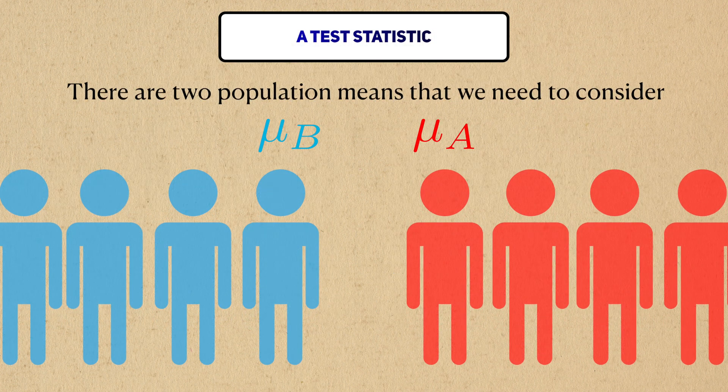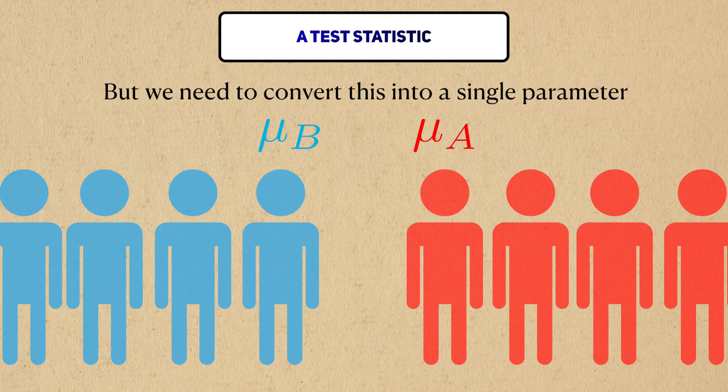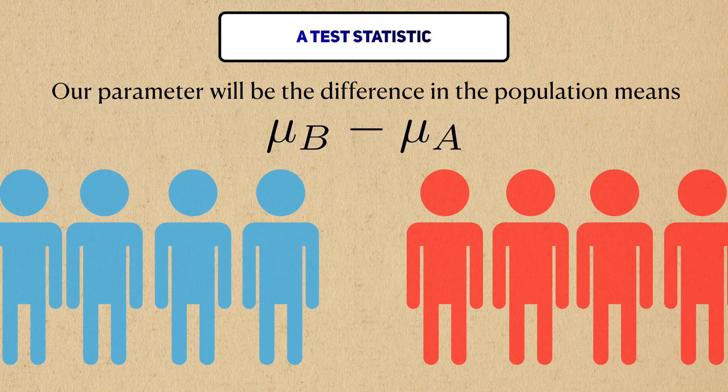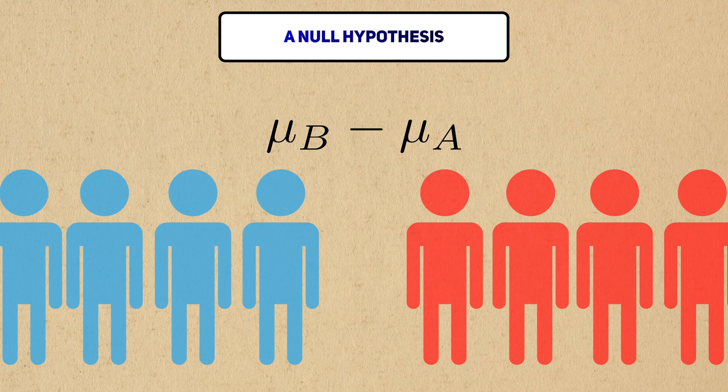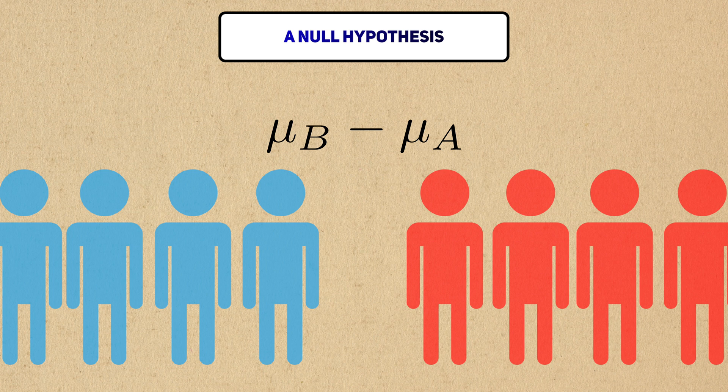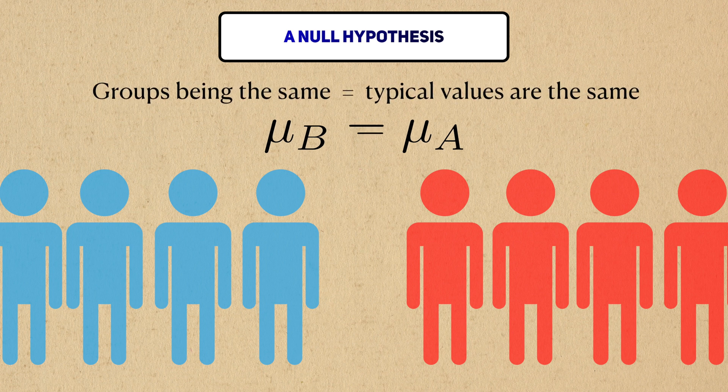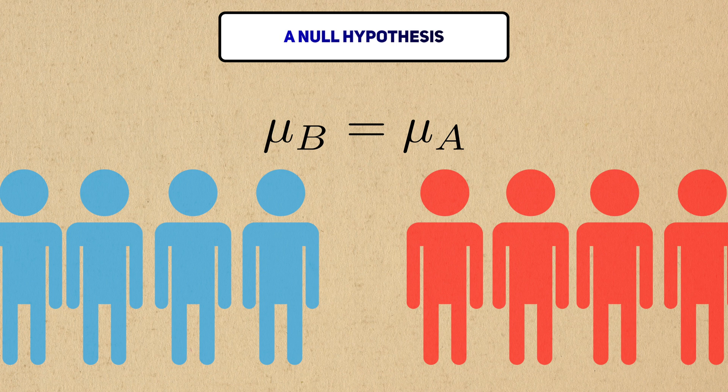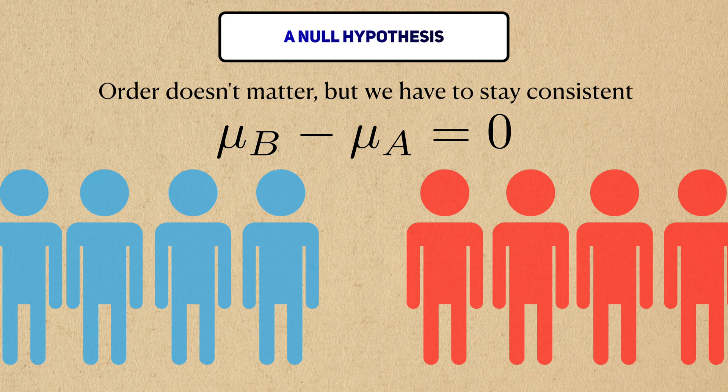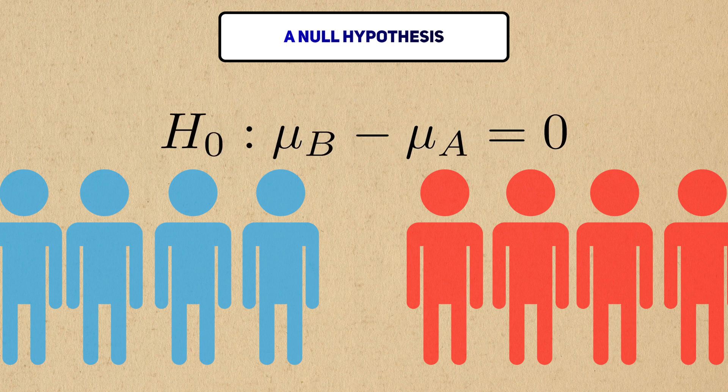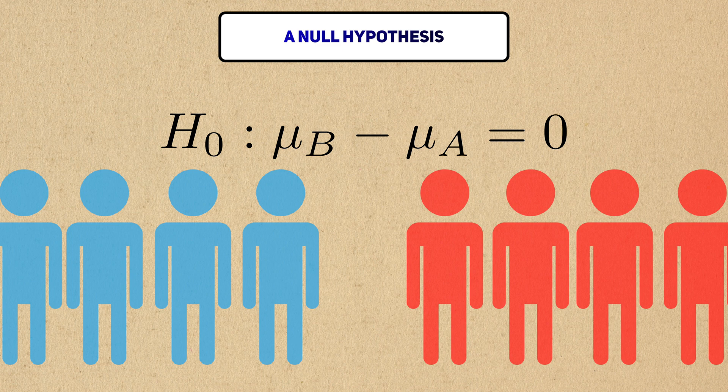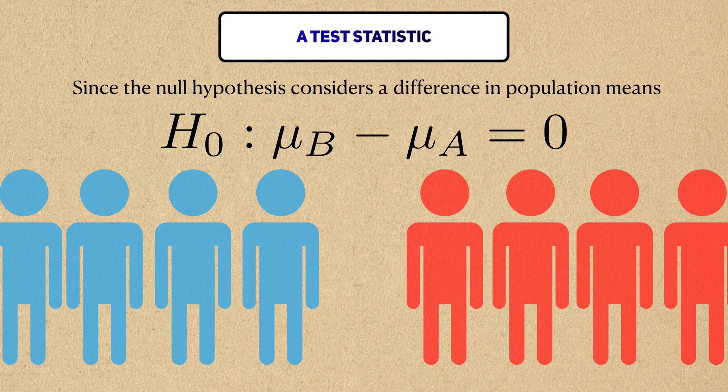Let's see how the two-sample t-test fits into this framework. With the two-sample problem, we have two population means that we'd like to compare, but we need a single parameter. Instead of considering the means separately, our parameter of interest will be the difference in the population means. For the null hypothesis, we should consider our research question. When we compare two things, we usually want to know if two groups are different. If two random groups are the same, then we expect their typical values to be the same. This is the same as saying that the difference between the two means is zero. The order of the means here doesn't matter, but once we have a null hypothesis, we have to be consistent in the calculation. So, a natural null hypothesis is that the difference in the population means is equal to zero.